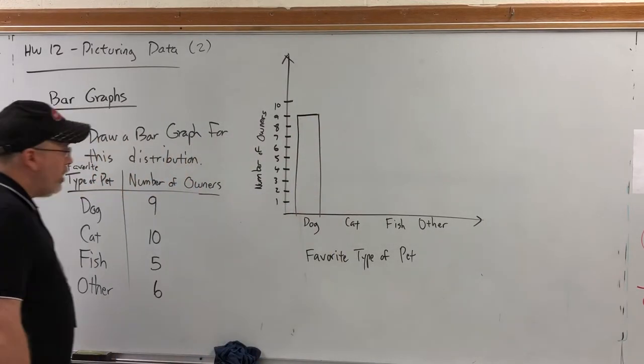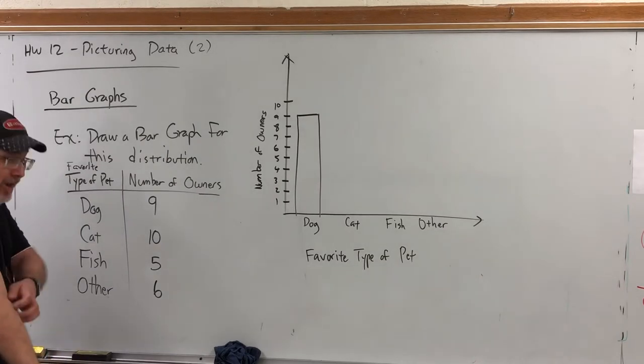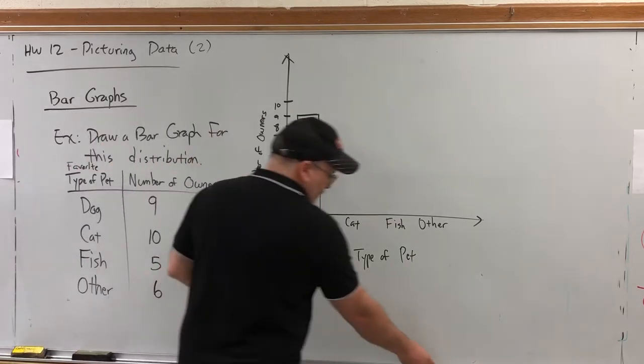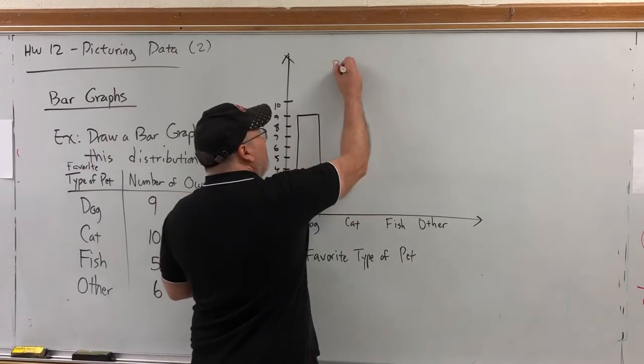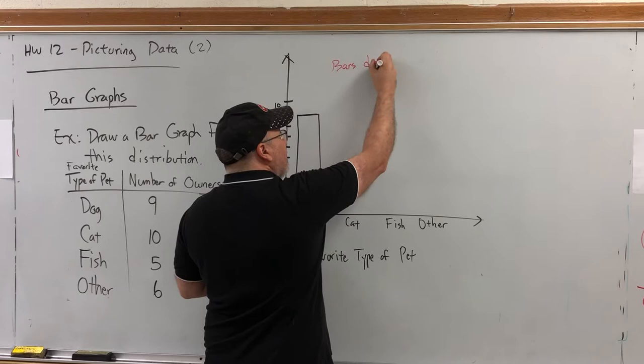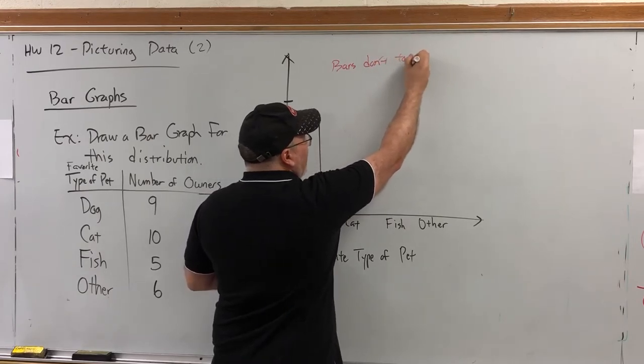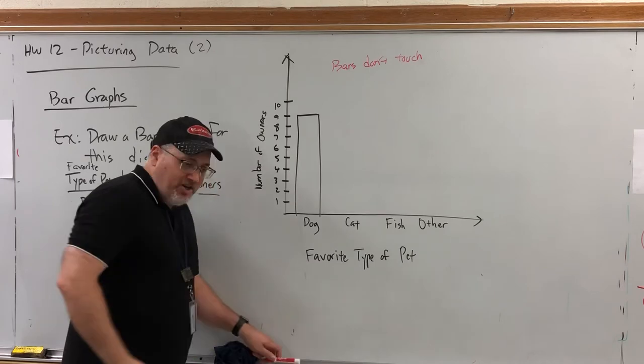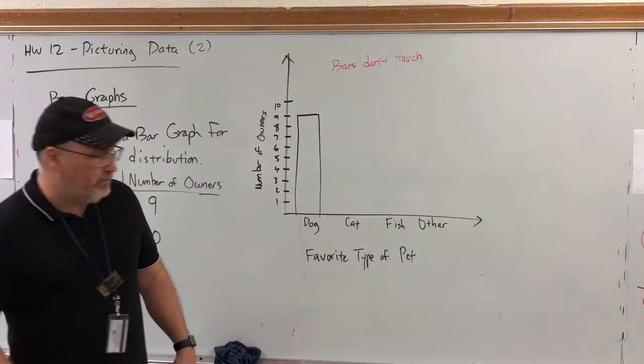Now, in a bar graph for qualitative data, there is the stipulation that the bars don't touch. It's nitpicky. You really don't lose anything or gain anything if you accidentally make the bars touch. But it is a common characteristic of bar graphs. The bars shouldn't touch.